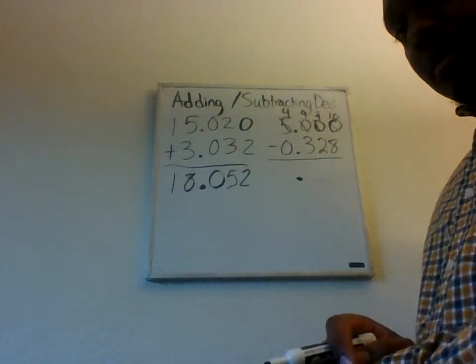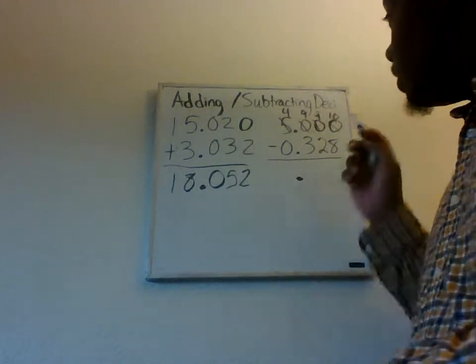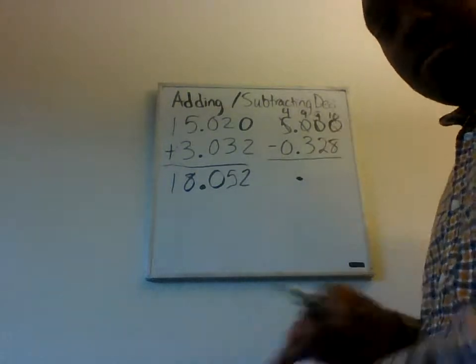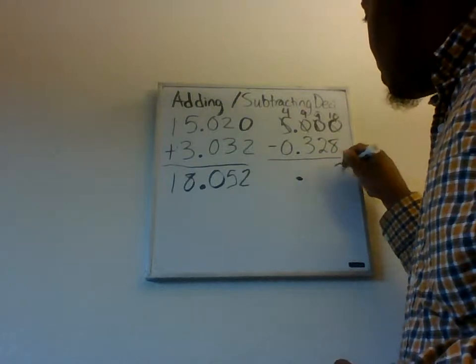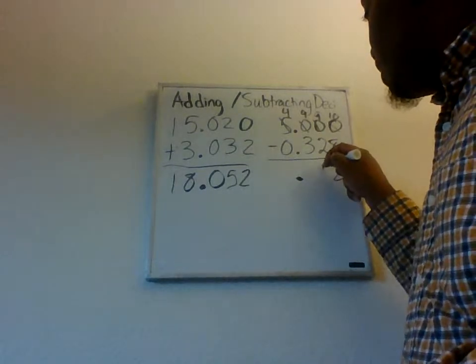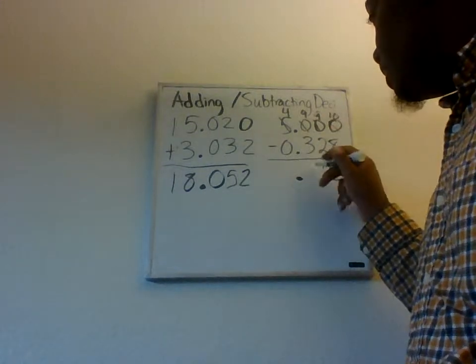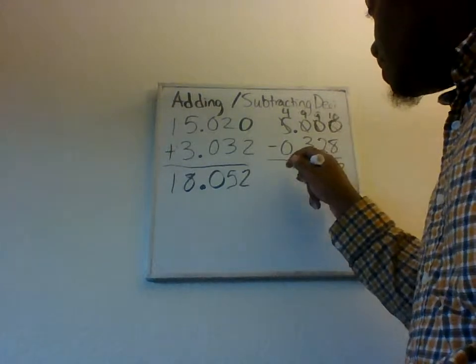I always do it that way just to make it easier. If you're used to doing one at a time to borrow, that is okay as well. Do whatever you need to. So, we get 10 minus 8, we end up with 2. 9 minus 2, we end up with 7. 9 minus 3, we end up with 6. 4 minus 0, we end up with 4.